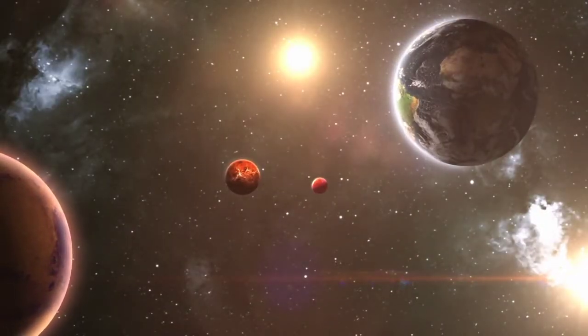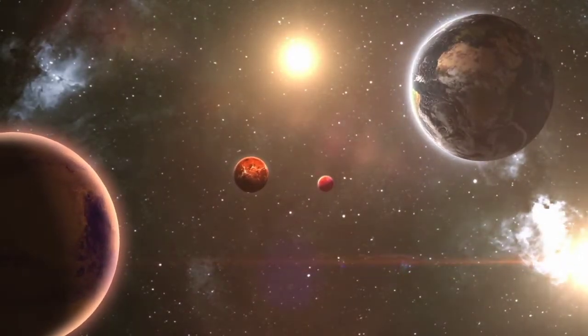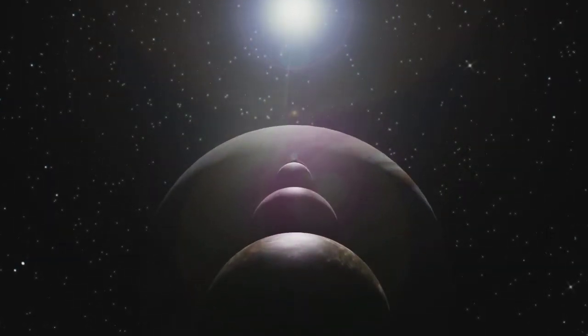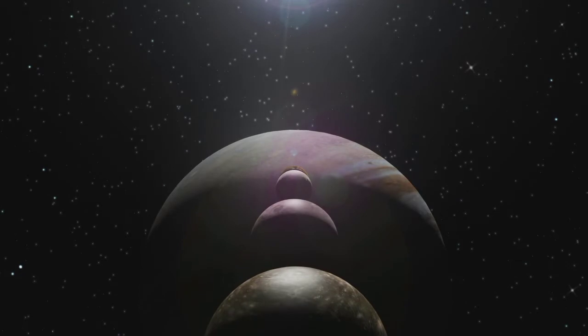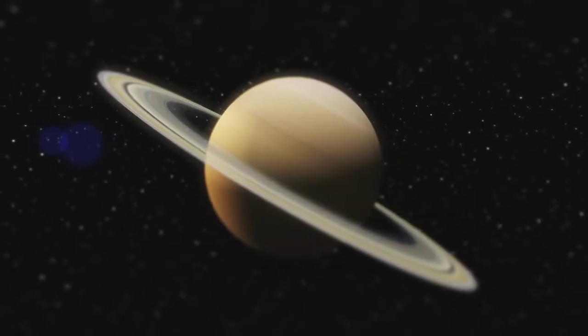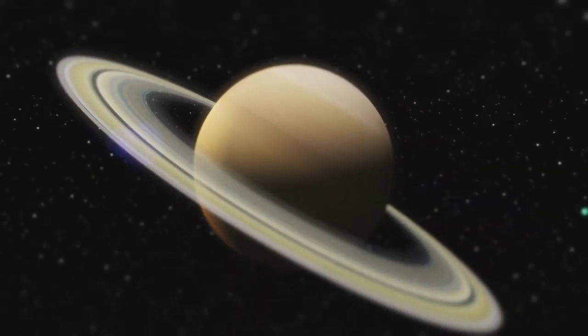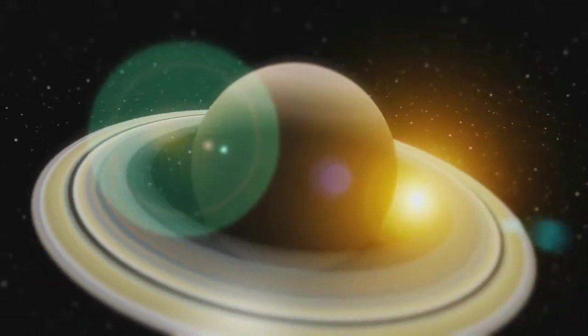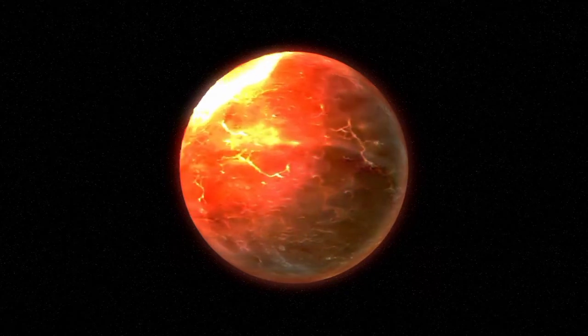Perhaps the inner planets were shielded from the collisions that could have formed rings, or perhaps the higher incidence of moons in the outer solar system means rings also became more common there. Another factor may be that larger planets simply have a larger volume in which a ring system can form and remain stable. Scientists believe the Earth did have a ring system in the past.